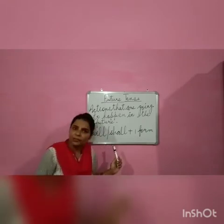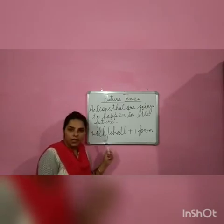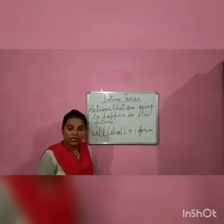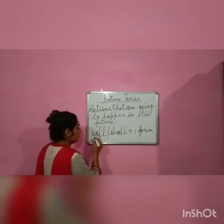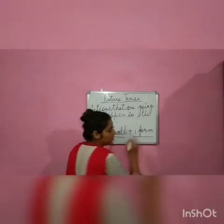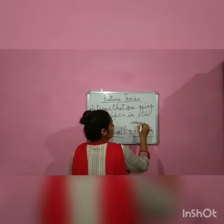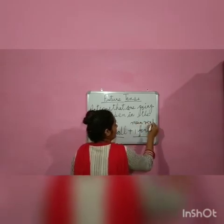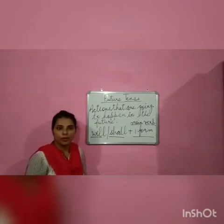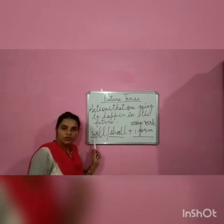Now, what is the basic rule of future tense? Simple future tense: use of will or shall plus first form. Remember students, in future tense the use of will or shall plus first form means main verb. First form hoti hai main verb or principal verb. If you remember — principal verb, main verb. So this is the rule of future tense: the use of will or shall plus first form.